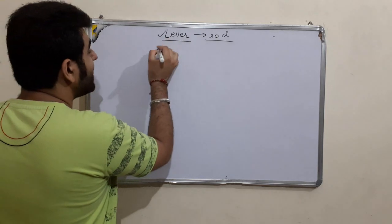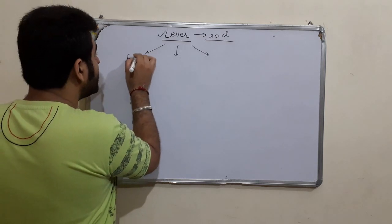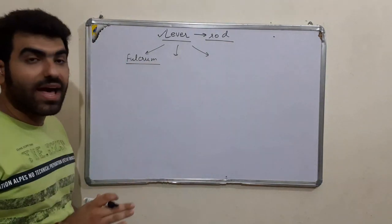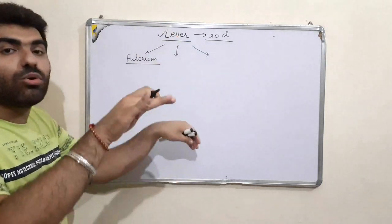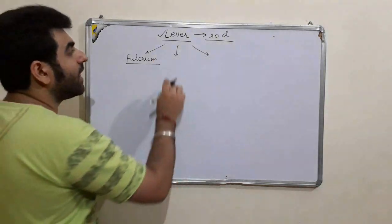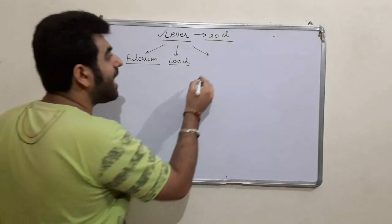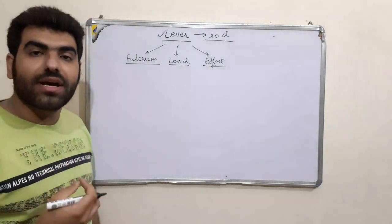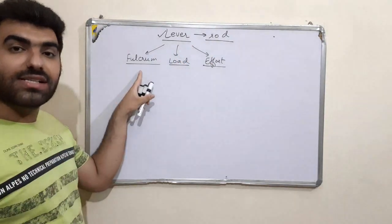A lever has three components: the fulcrum — the point about which the lever rotates, providing an axis; the load — the resistive force that we need to overcome; and the effort — the force we apply to overcome the load. So a lever is basically a rod that can rotate about a point called the fulcrum.